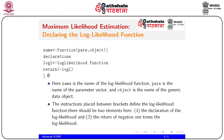Here, this is the parameter, this is the data object, and these are the declarations. The log likelihood function is calculated and then the negative log likelihood is returned. The name 'pars' is the parameter vector and 'object' is the generic data object. The instructions placed between brackets define the log likelihood function — you declare the log likelihood and then return negative one times the log likelihood.